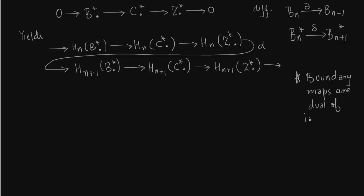From the last slide, HN plus 1 of B star is BN, and HN of B star is BN minus 1. You should go back to the previous slide to see how that came about. These are dual to the inclusion map — the inclusion map is BN into ZN, and the dual map is opposite. I am now going to rewrite the homology groups associated, as written on the previous slide, and fill up the diagram.